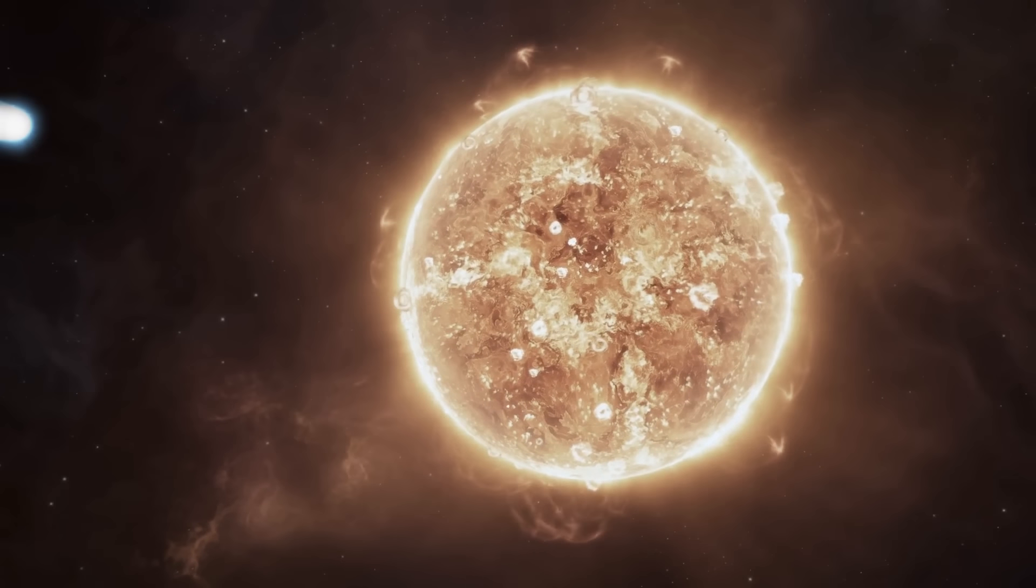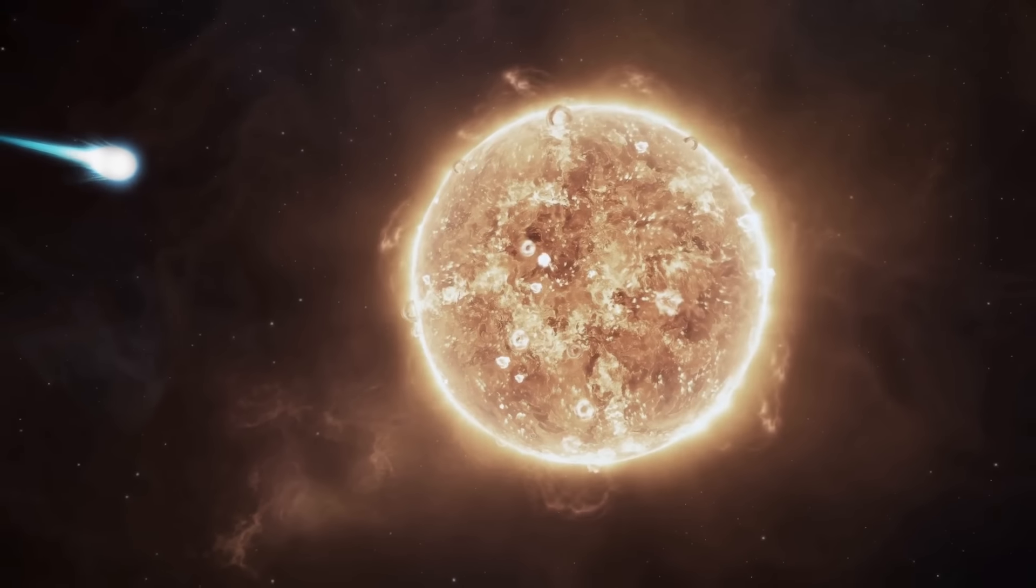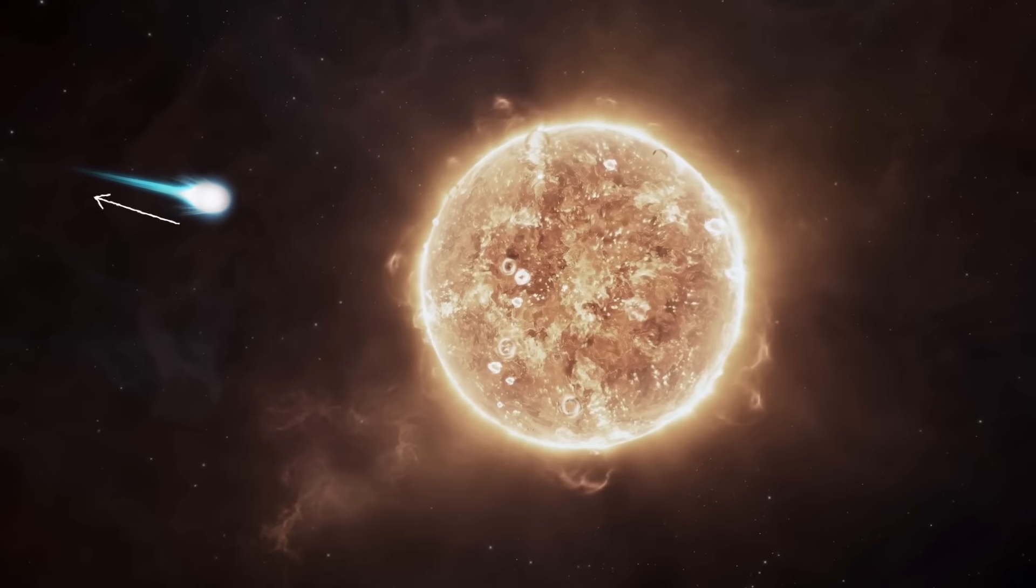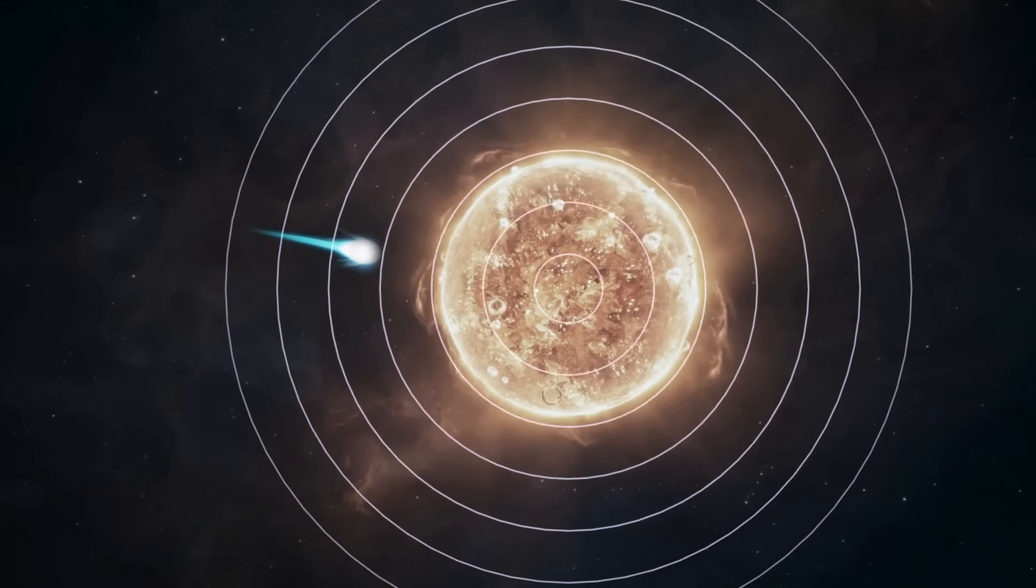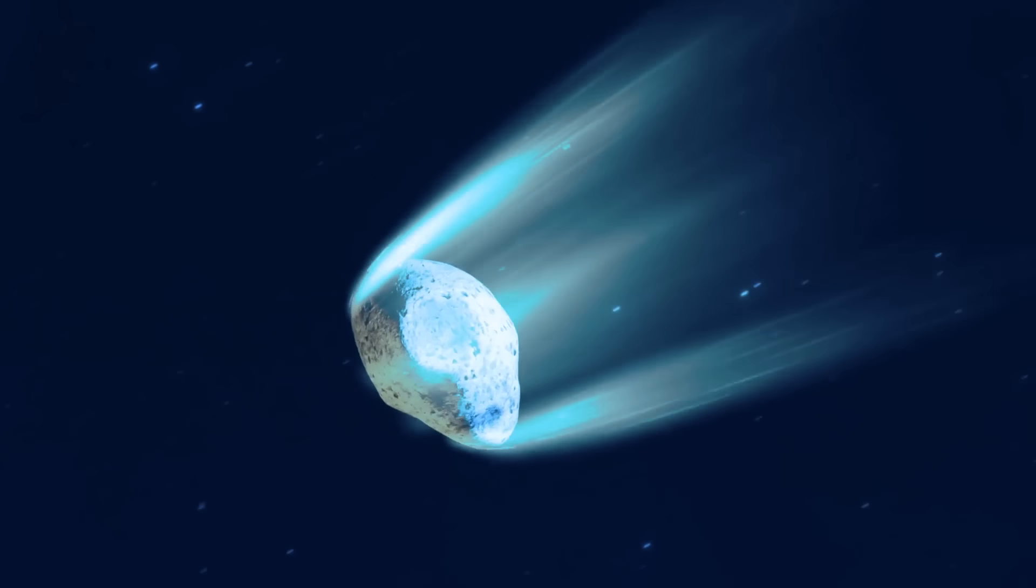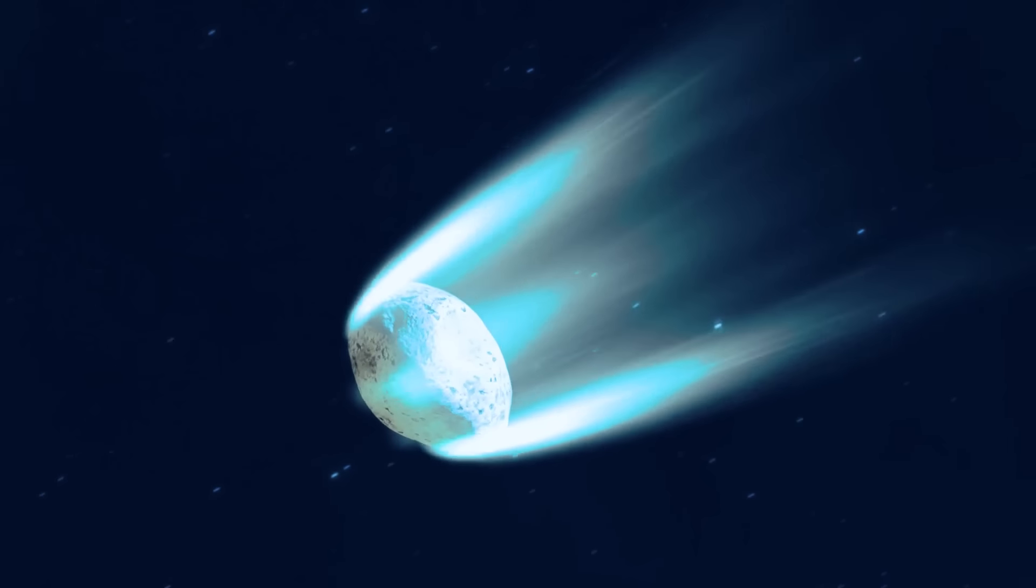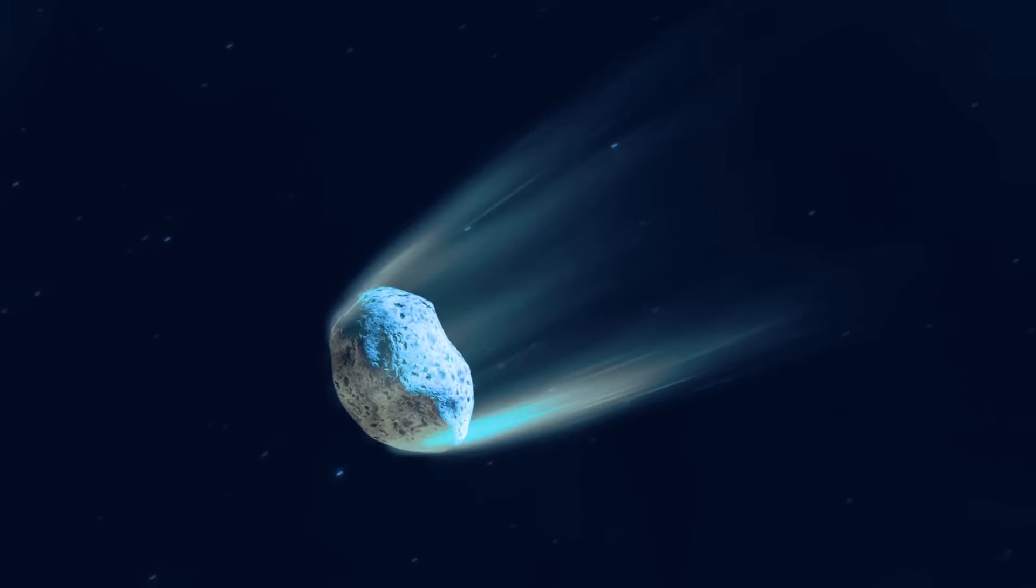The tail always points away from the star that influences the comet. It happens because the tail gets blown in the opposite direction by solar radiation and solar winds. That's why the tail can often be in front of the comet, not trailing after it.